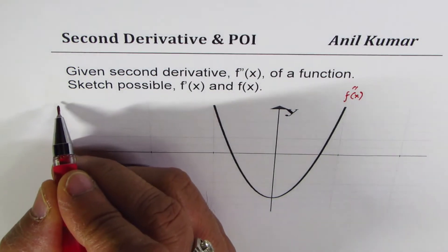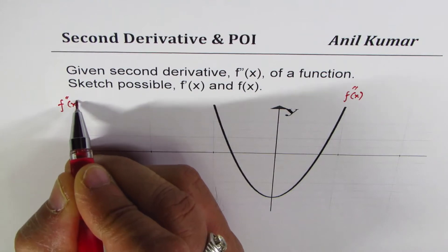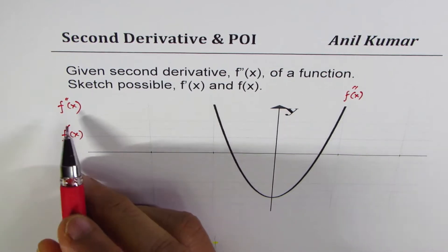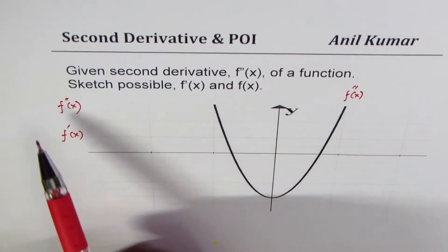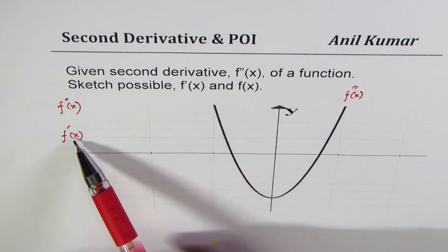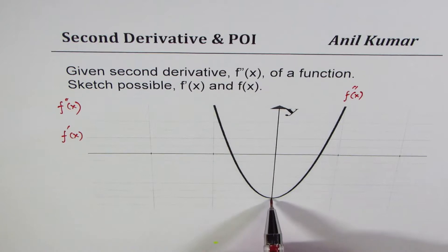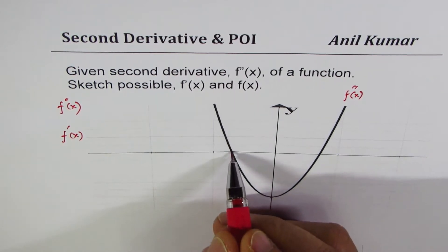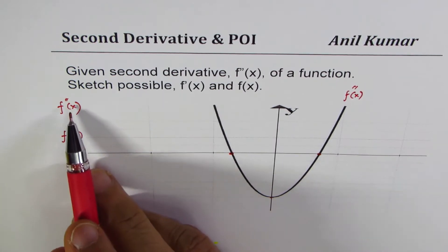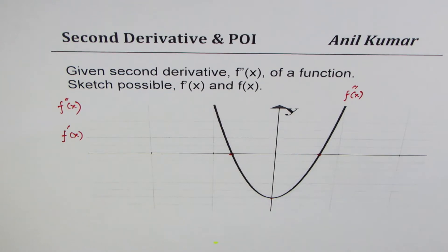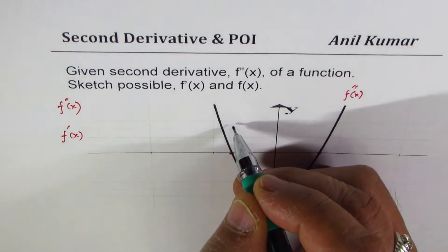We are given the second derivative, and we will now sketch the first derivative. The second derivative is the derivative of f'(x). So if the second derivative is 0, what does it mean? It means that at f'(x), we had a turning point. So at f'(x), we have a turning point.